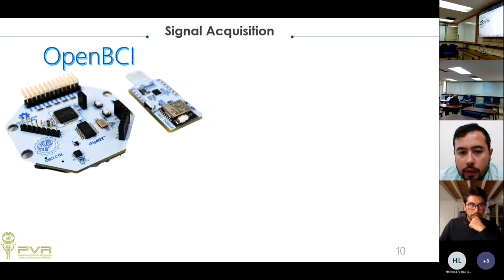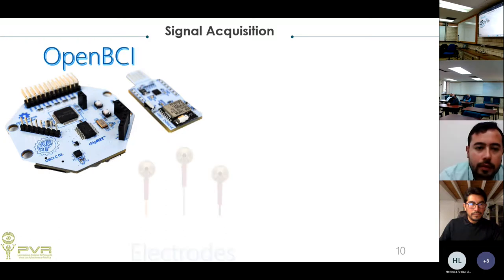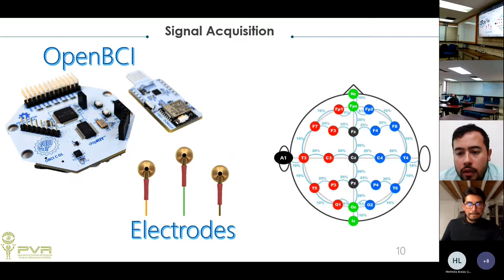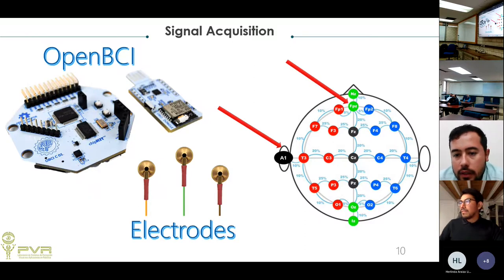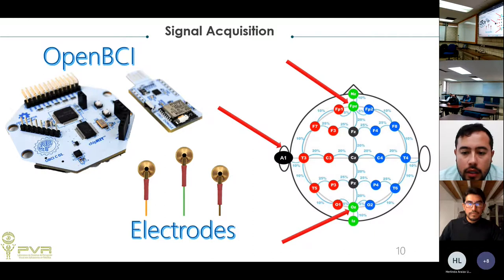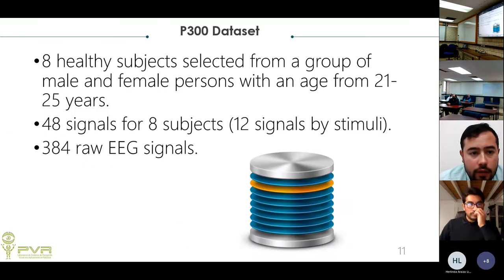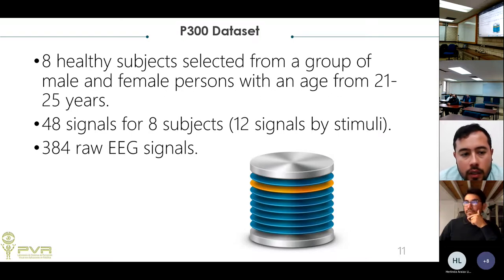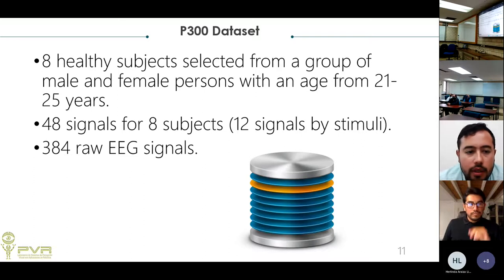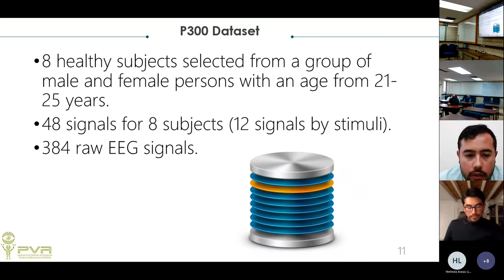For the P300 wave dataset, eight healthy subjects aged 21 to 29 were used. Twelve signals per stimulus were created, giving 48 signals per subject and 384 raw EEG signals total. Pre-processing involved a Butterworth bandpass filter from 1 to 15 Hz, followed by normalization — since each subject has different P300 latency and amplitude. Signals were then grouped by epoch of each stimuli intensification to produce averaged signals per box.